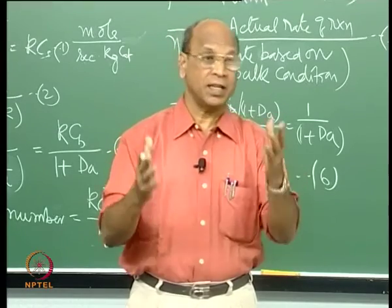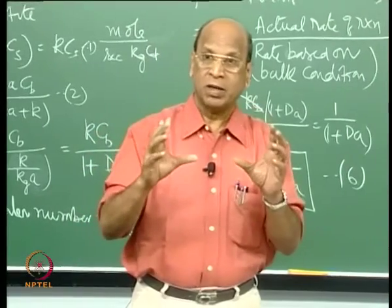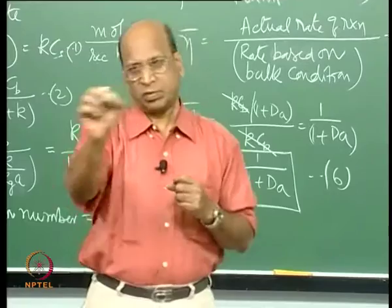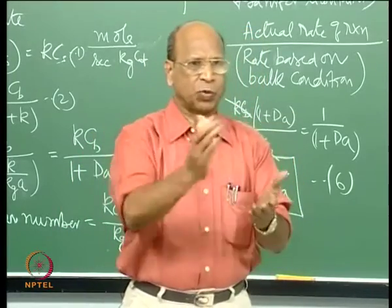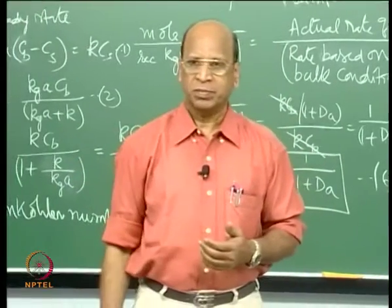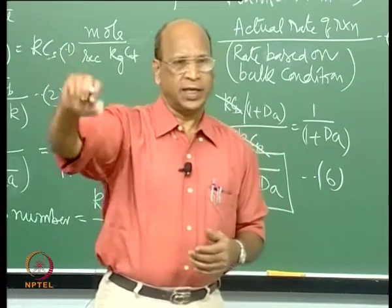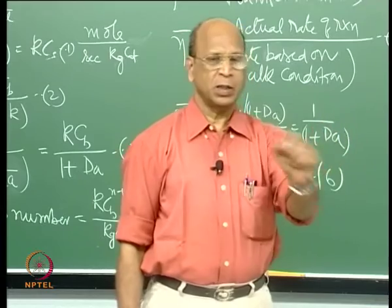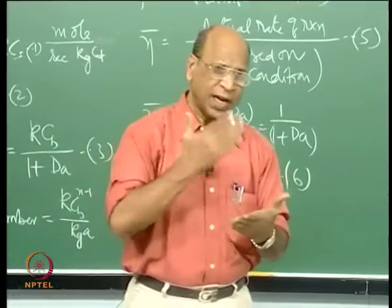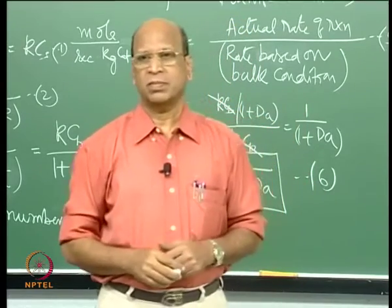You cannot say any definite order for LHHW-type rate equations. It is purely for the power law model, where rate equals K times C_A^something times C_B^something, that you can define order. For heterogeneous systems, unless you take the LHHW equation and neglect all denominator terms except one and also remove the backward reaction, then you can say it is second order — C_A to the power 1, C_B to the power 1. So you cannot say what the order of reaction is for any rate equation unless you have a power law model.